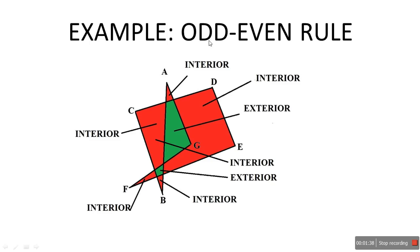For example, let's say this is a polygon. We draw a line from point P to the outside. How many edges are crossing? 1 and 2 — two edges are intersecting the line. So it is an even number. Even means exterior, so it is an exterior region. Similarly for this point, we draw a line to the outside. How many edges are crossing? 1 and 2 — again 2 is an even number, so again it is an exterior region.